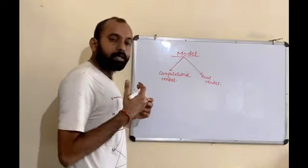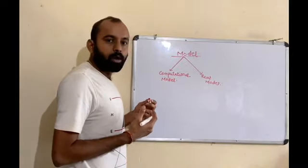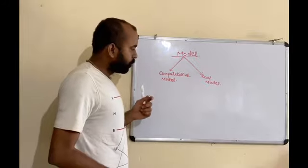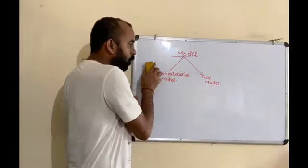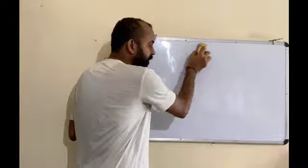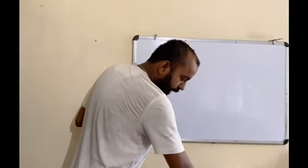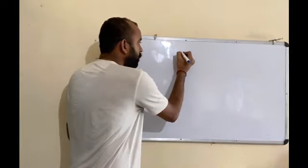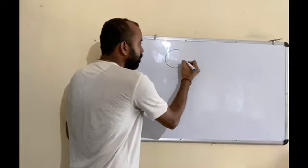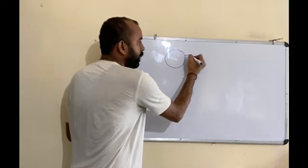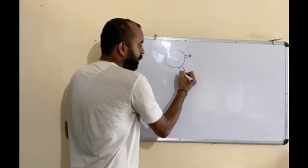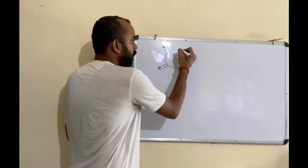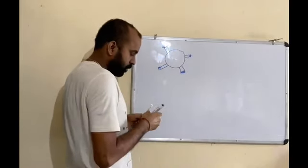The second one is your real model, which you place in animal subjects or in human subjects, and you identify the effect of pathogenicity of the virus. The first and foremost thing to create a model is you need to know the genetic sequence of any target.